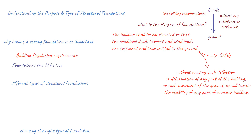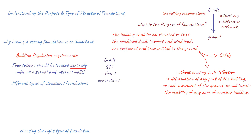Foundations should be located centrally under all external and internal walls, taken to a depth below the influence of drains and surrounding trees, and taken to natural undisturbed ground of adequate ground-bearing capacity. The regulations prescribe that a suitable concrete mix for foundations — either a grade ST2 or Gen 1 concrete mix complying with BS8500/2 — should be used.